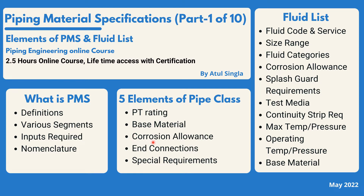Corrosion allowance will be covered in a bit more detail, as it is the basis for defining the thickness of any pipeline. Then end connections — a very important part. We'll see what kinds of end connections exist, how they are defined in the PMS, and how the nomenclature relates to them. Finally, special requirements — many pipe classes will have special requirements that must be covered in the nomenclature so we can recognize them in a particular pipe class.